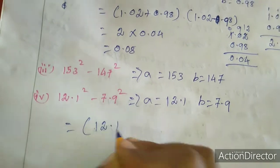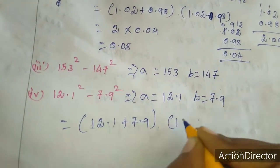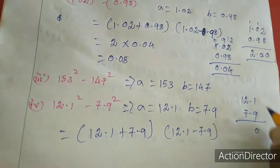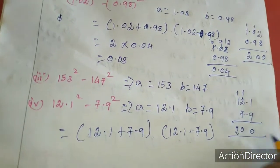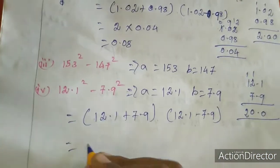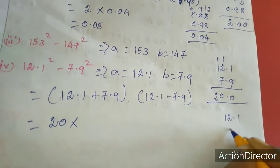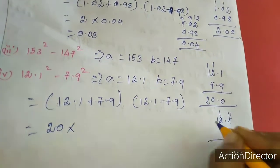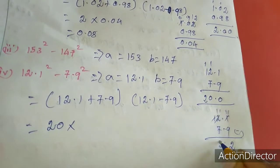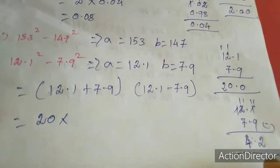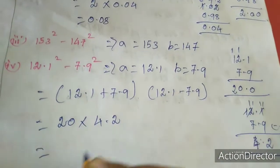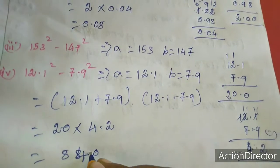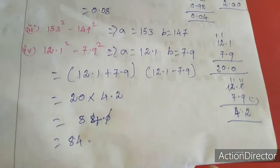For the fourth sum: a plus b means 12.1 plus 7.9 equals 20. A minus b means 12.1 minus 7.9: borrowing — 11 minus 9 is 2, carrying gives 4.2. So the result is 20 into 4.2. Multiplying: 2 times 4.2 is 8.4, and 20 times 4.2 gives 84. This is the answer for the fourth sum.